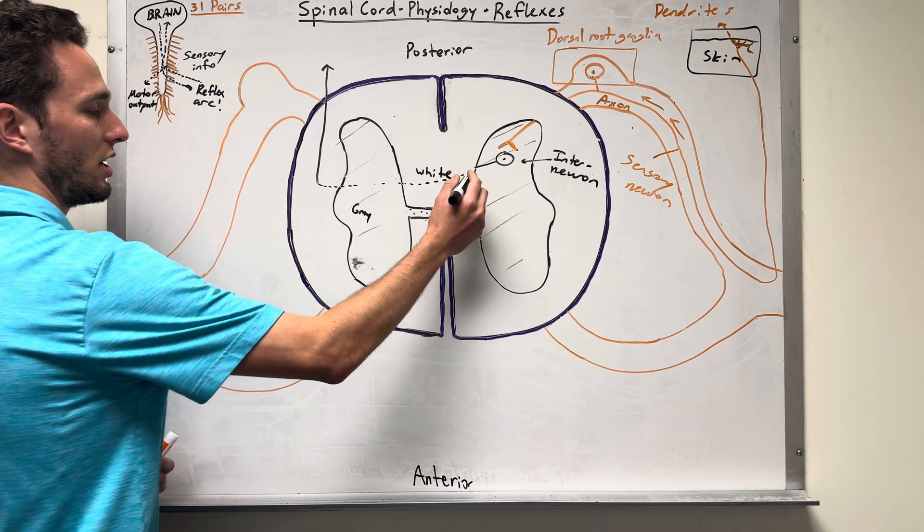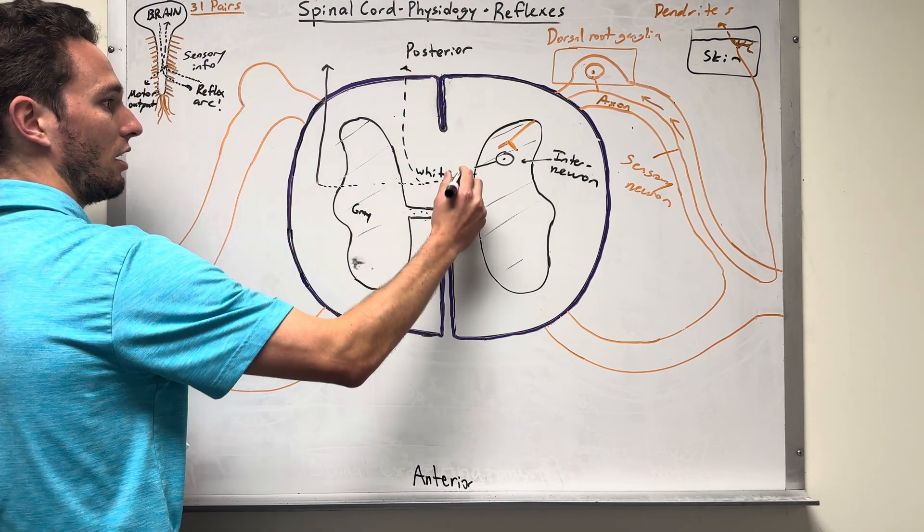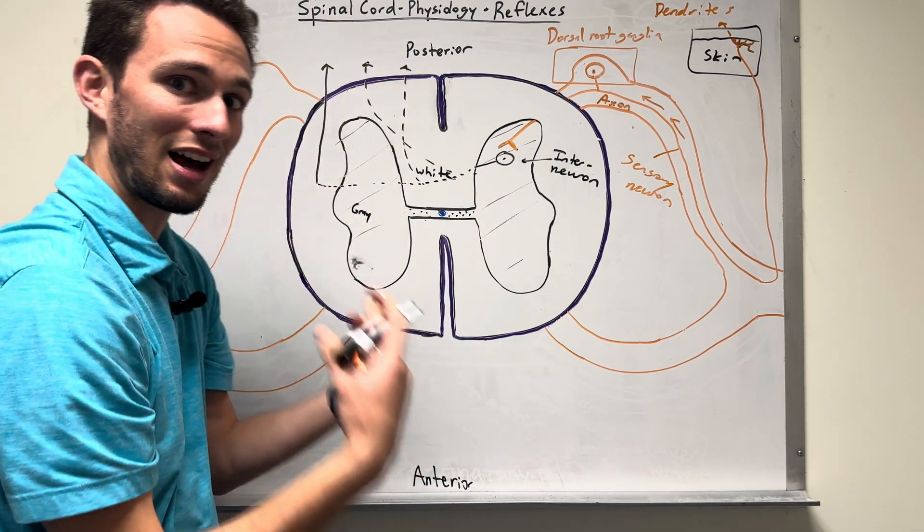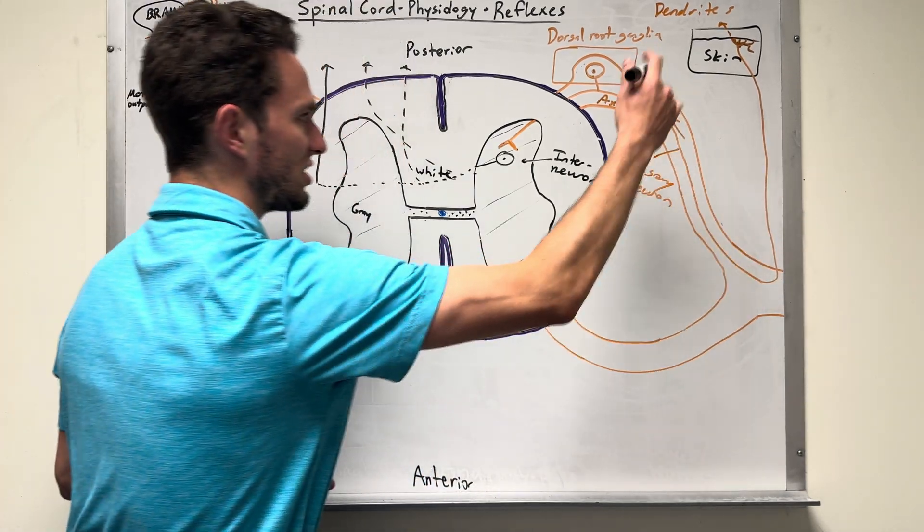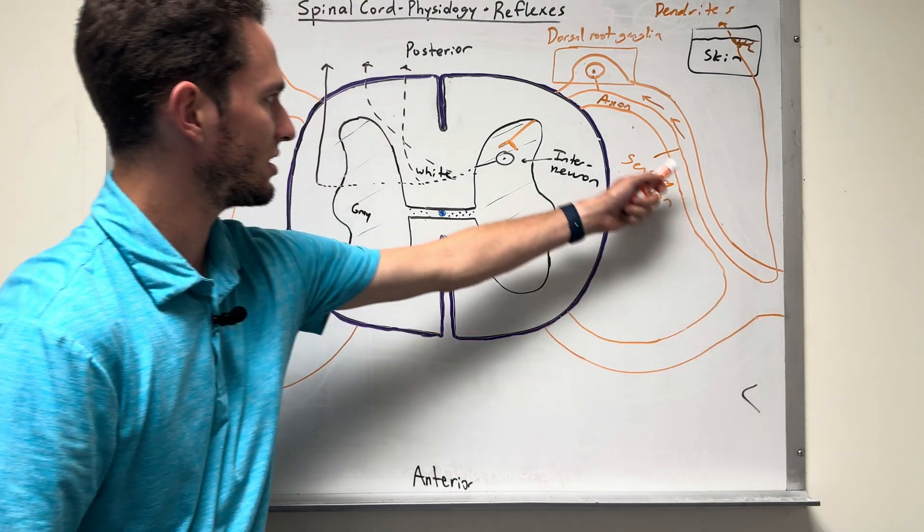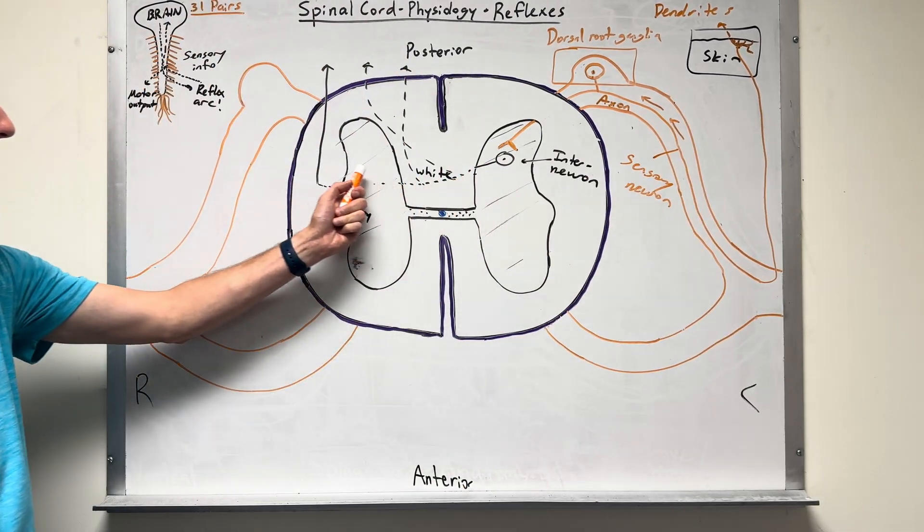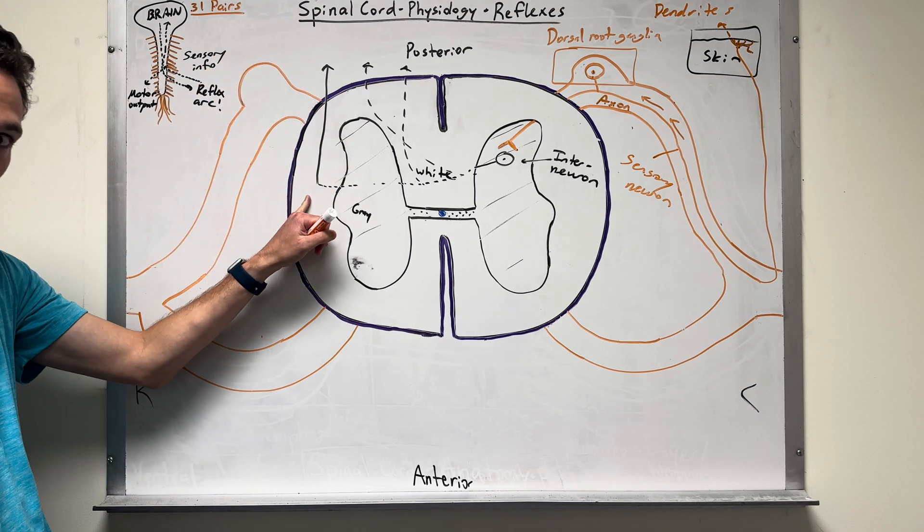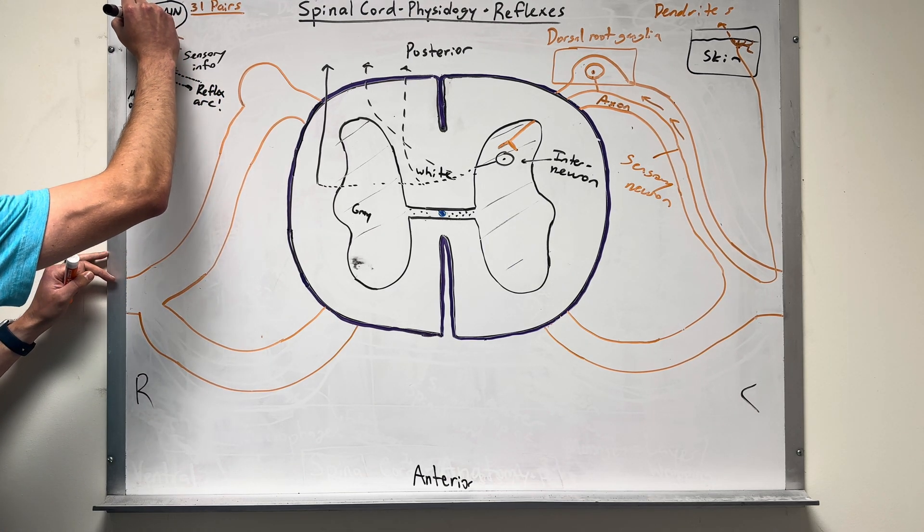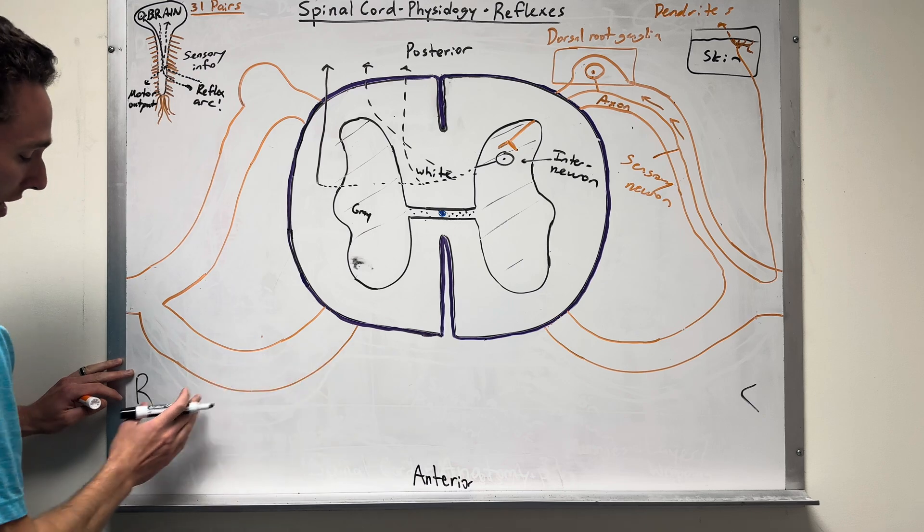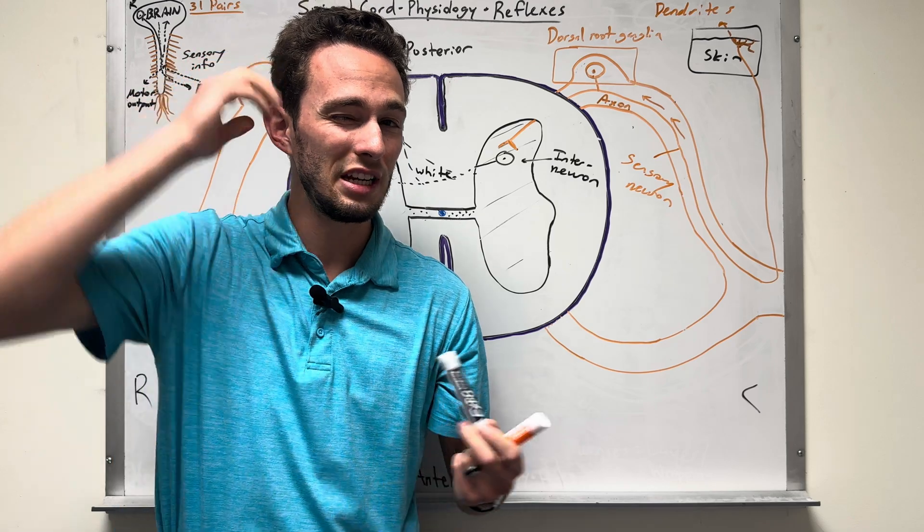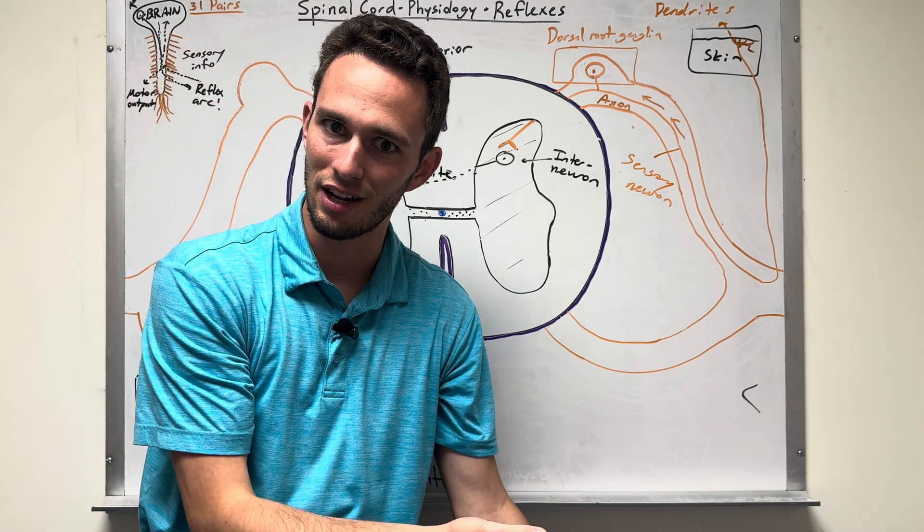Now, what's interesting is there's also different sensations that can travel up different tracks of the white column. But all of these, you notice, are going to be going up on the opposite side. So detected, we're going to say this is the left side of the body, this side is the right side of the body. Detecting sensations here, interneuron crosses over with its axon and starts traveling up in the white matter. Couple things here. Once we travel up, we're going to process this on the right side of the brain. This is the reason why the right side of the brain perceives the left side of the body. Isn't that fascinating?